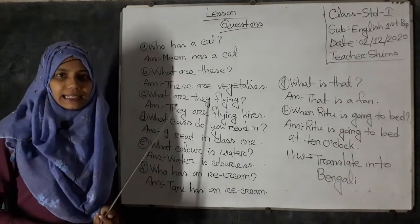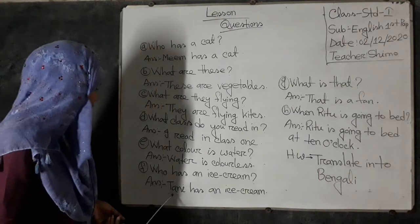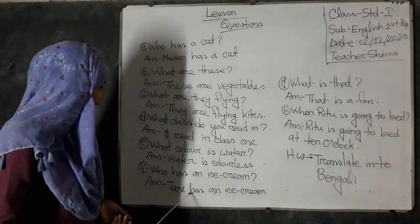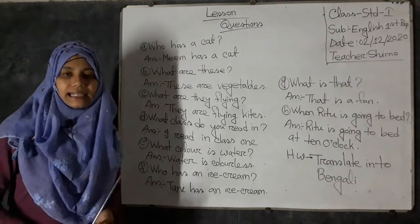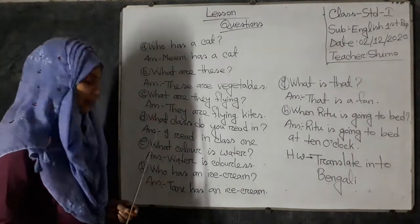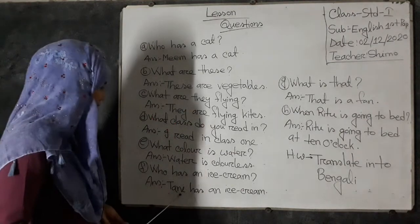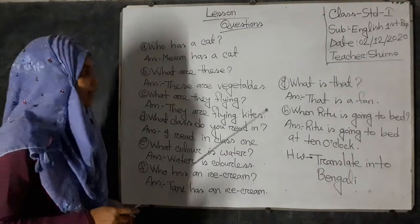Who has an ice cream? Carl has an ice cream. Tani has an ice cream. Tani is an ice cream. Tari is an ice cream.